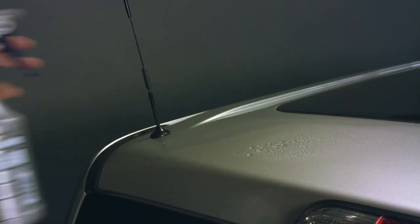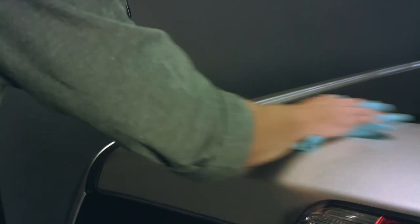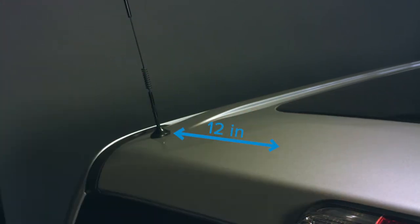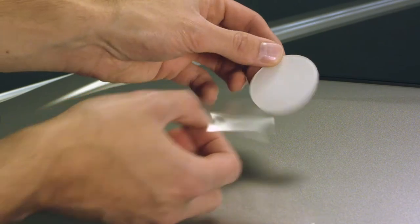To install the adhesive disc, simply clean the area you've chosen for the antenna, at least 12 inches away from any other antennas and at least 6 inches away from any windows including sunroofs. Remove the clear film from the disc and press it securely in place.